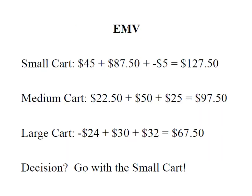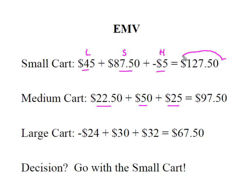These products from the previous table are now summed to come up with the EMV for each alternative. This represents, for example, small cart with low tourist traffic, small cart with the same tourist traffic, and small cart with higher tourist traffic. After summing all products for each decision alternative, my decision is simple: I select the one with the highest expected monetary value, and that's going to be the small cart. In the long run, it will return the highest expected — or weighted average — payoff. I hope this helped. Have a great day.